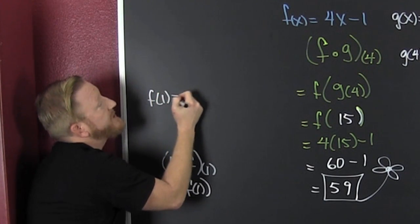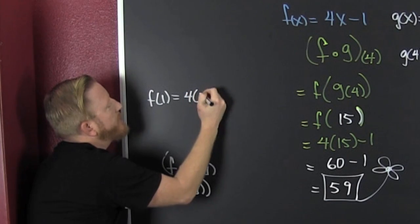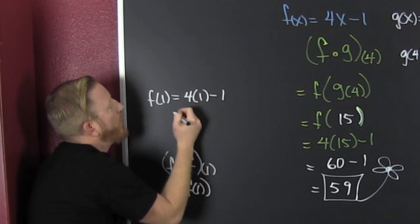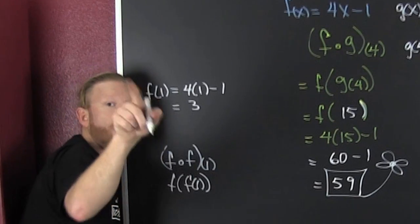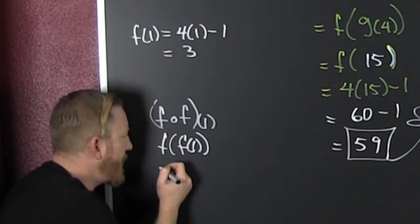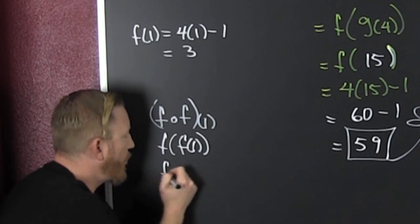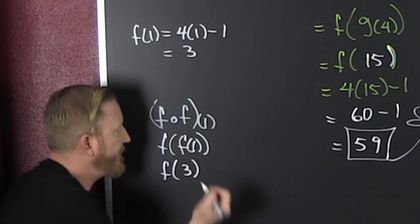So, f of 1, that's, wait for it, 4 times 1 minus 1, which is 3. So what are we doing? We're coming way down here. We're low. We're looking for f of 3.